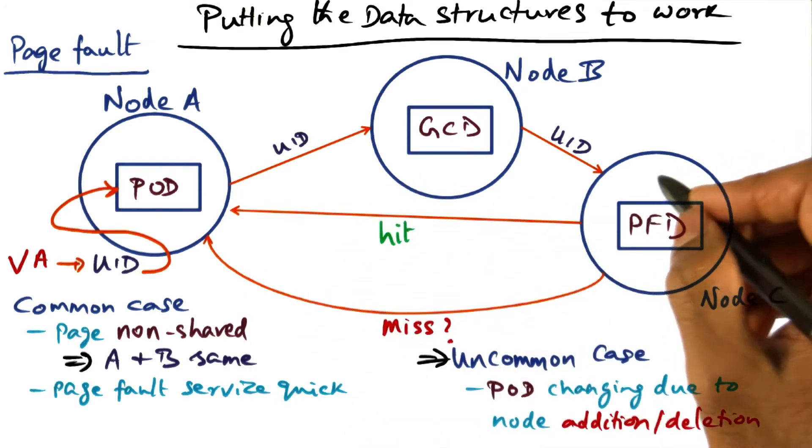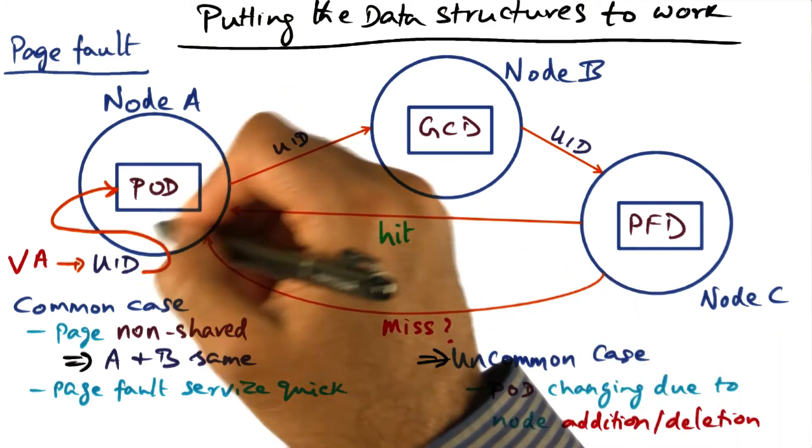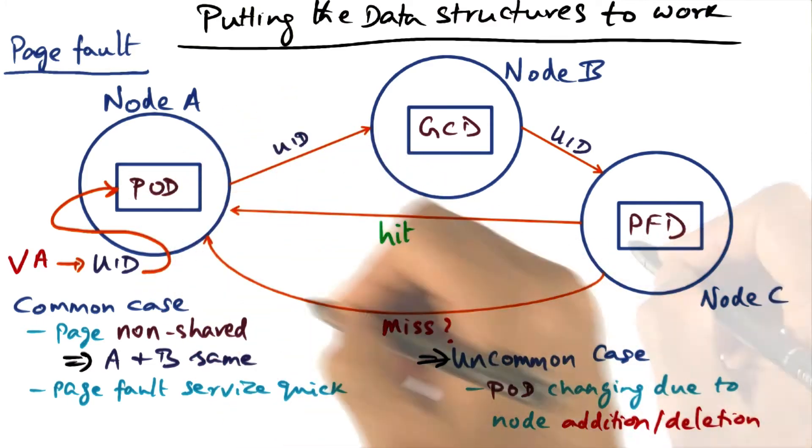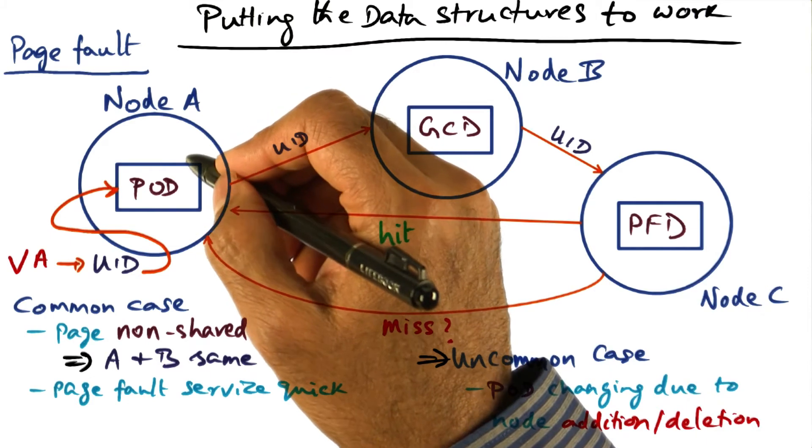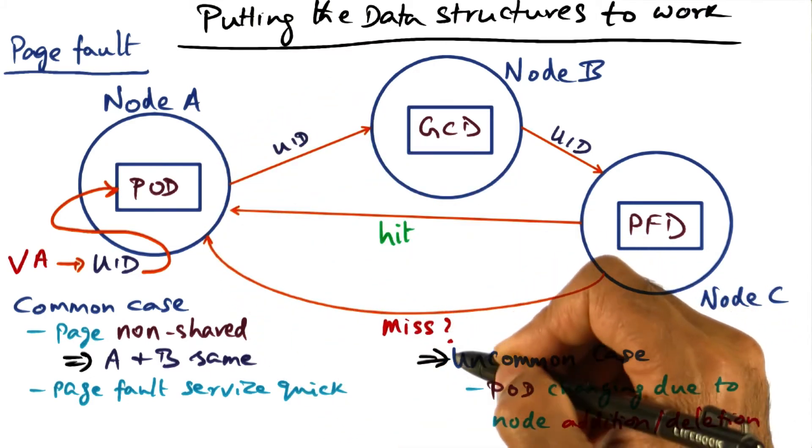So if there is a miss, either case, the first case is this node replaced that page, or the second case is my POD information misled me. Both cases, I'll have a miss, and I know that it is probably the uncommon case.